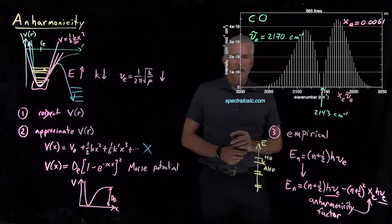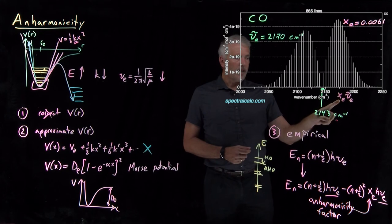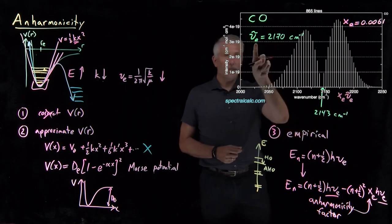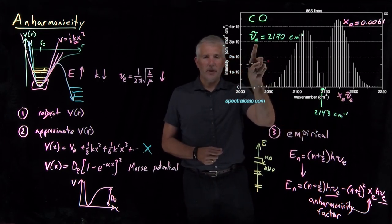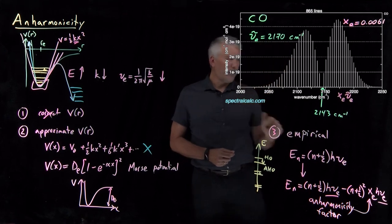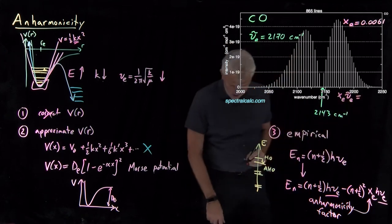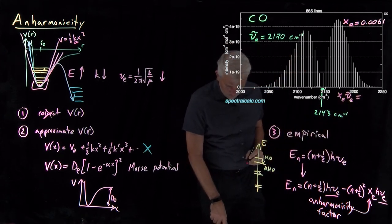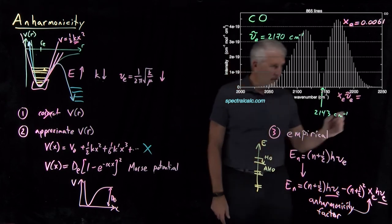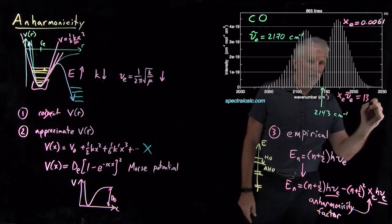If we're working in wavenumbers, that anharmonicity correction multiplied by the fundamental vibrational frequency in units of wavenumbers works out to be roughly 13 wavenumbers.